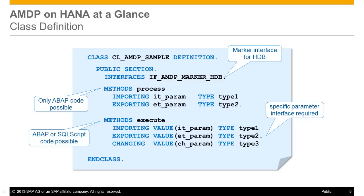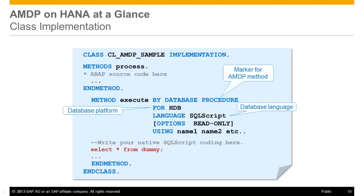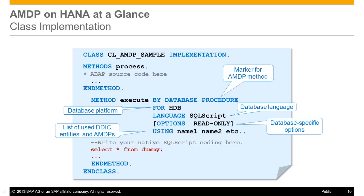AMDP methods follow the usual ABAP object-oriented rules. They can be public, protected or private, and they can be implemented as interface methods. An AMDP method has to be specified with the keyword 'by database procedure', followed by the database platform and the database language to be used. Database-specific options can be specified, along with a 'using' clause specifying the names of other AMDP methods, ABAP dictionary views, and tables used in the AMDP source. The AMDP method is a container for SQLScript-based code.